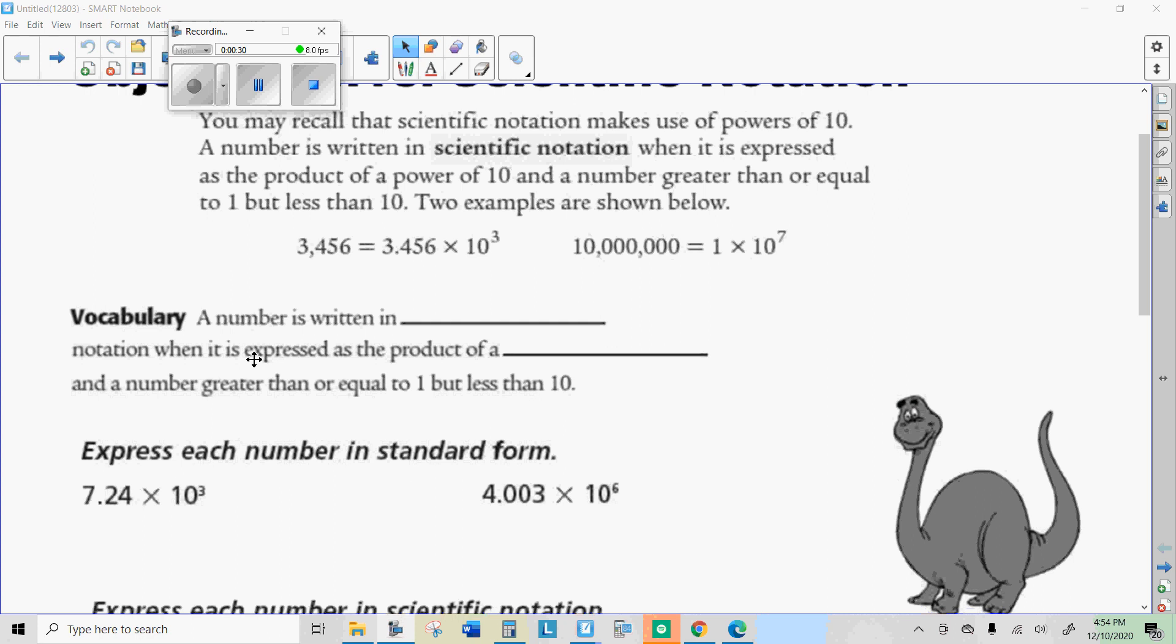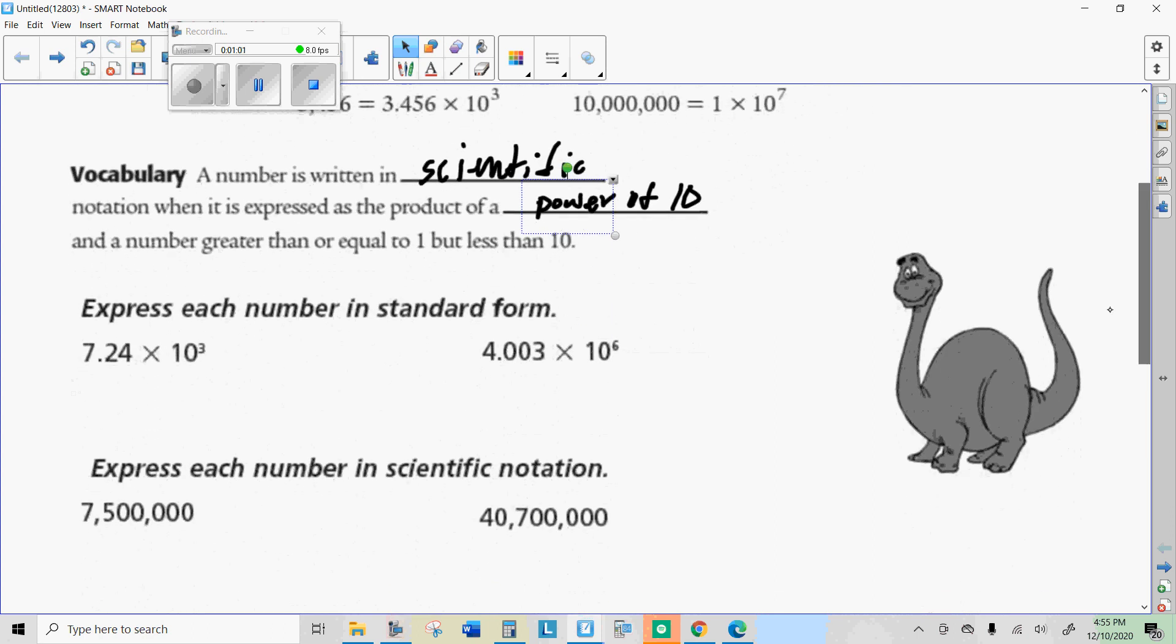Let's do a quick little vocab here. A number is written in scientific notation when it is expressed as the product of a power of 10, so you have to have a power of 10, and a number greater than or equal to 1 but less than 10. These are both considered written in scientific notation.